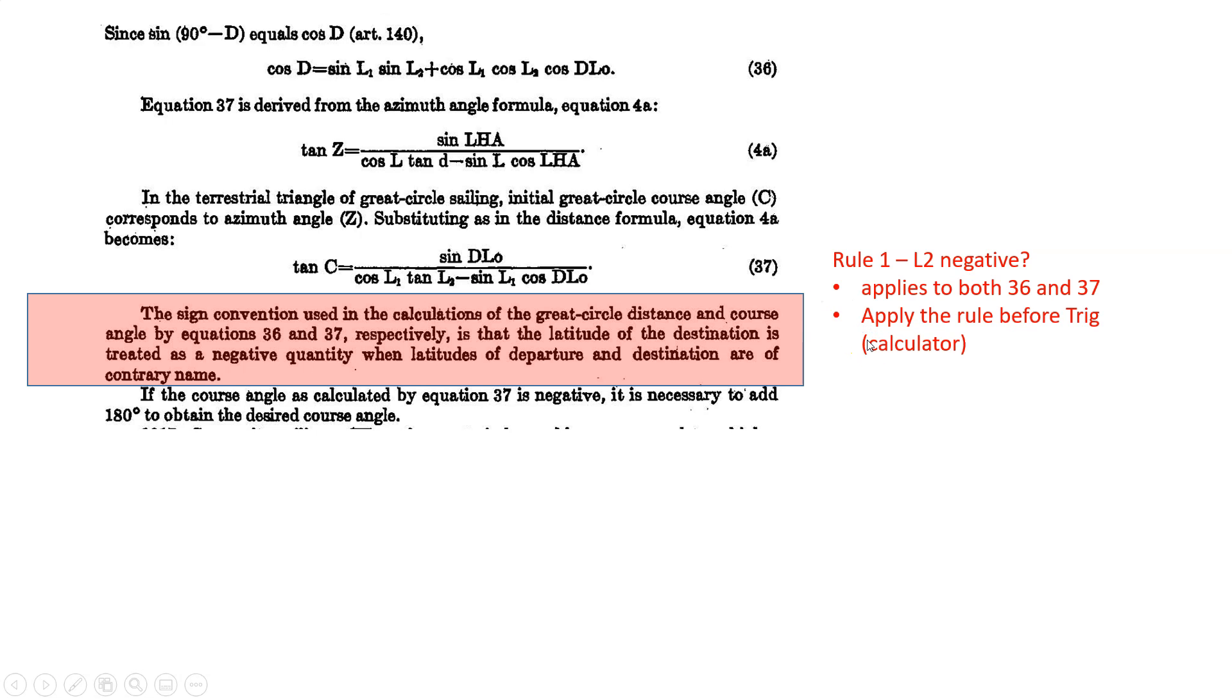Now, the rule is basically, is L2 going to be negative when I do my trig? And the answer is, if I start in north, I end south, then yes, L2 will be negative. If I start in south and I go north, then yes, L2 would be negative. If I start north and I stay north, L2 will not be negative. If I start south and I stay south, L2 will not be negative. So it applies to both 36 and 37. And the thing is, you have to apply this rule before you start using your calculator.